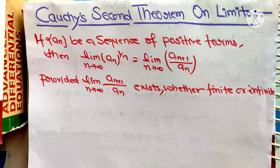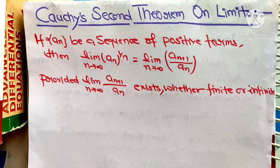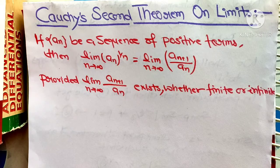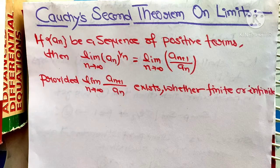Statement is: if a_n be a sequence of positive terms, then limit as n tends to infinity of a_n to the power 1/n is equal to limit n tends to infinity of a_{n+1} upon a_n, provided the limit n tends to infinity of a_{n+1}/a_n exists, whether finite or infinite.